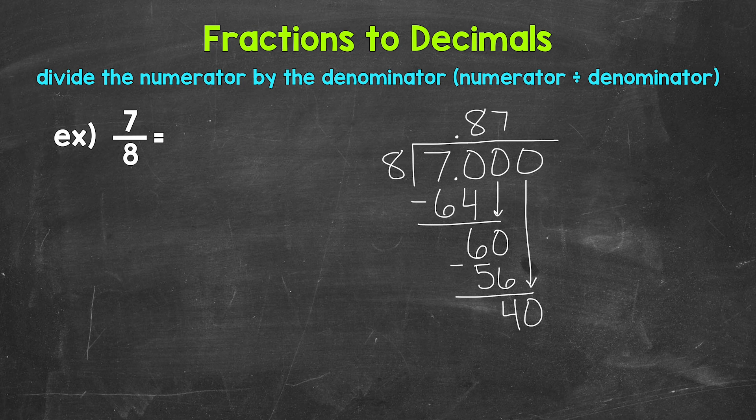And now we have 40 divided by 8, which is 5. So we put 5 up top here. Multiply 5 times 8 is 40. Subtract 40 minus 40 is 0. So we have that clean cut zero there at the bottom and nothing else to bring down within our problem. So we are done.